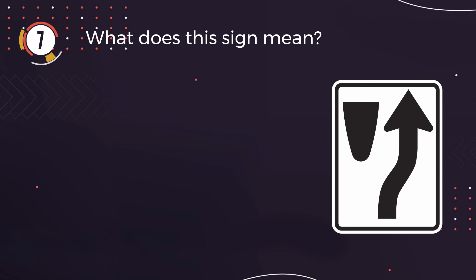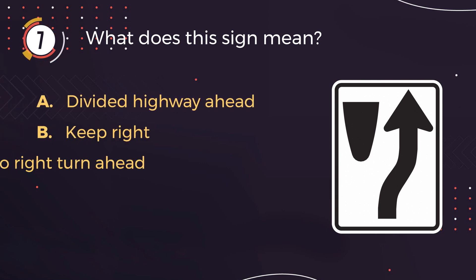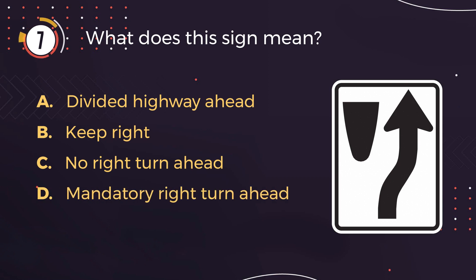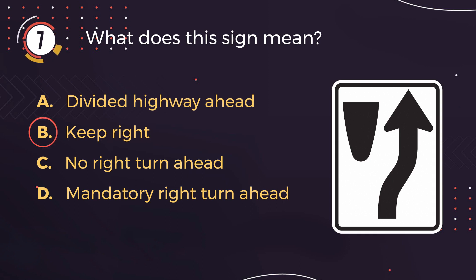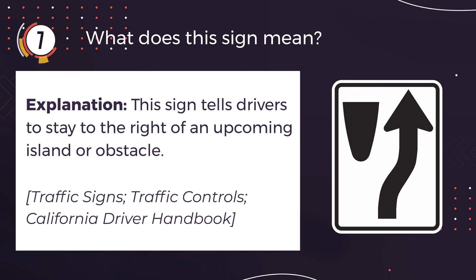Number 7. What does this sign mean? A: Divided highway ahead. B: Keep right. C: No right turn ahead. D: Mandatory right turn ahead. The correct answer is B: Keep right. Explanation: This sign tells drivers to stay to the right of an upcoming island or obstacle.